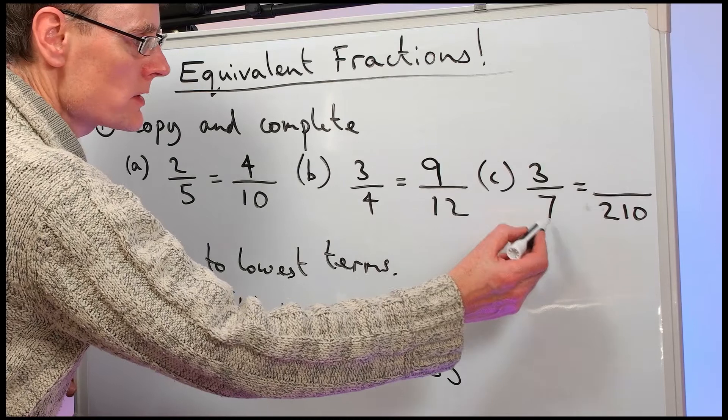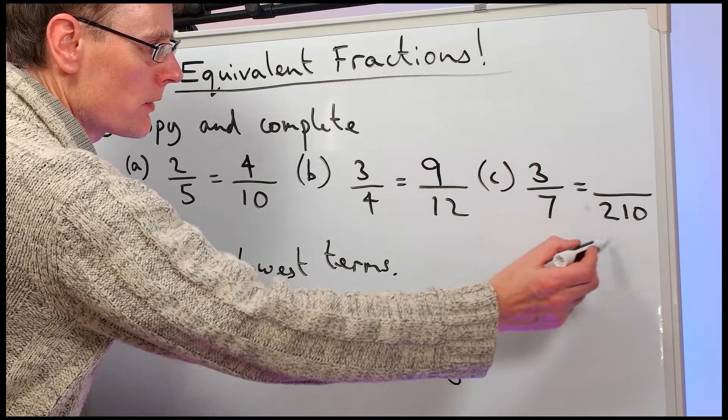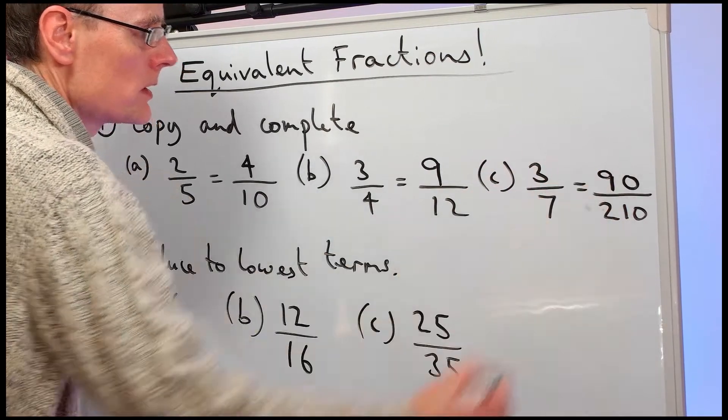And the last one. Part C. Sevens into twenty-one would go three times. So we're multiplying the bottom by thirty. Three times three is nine. So it is ninety.